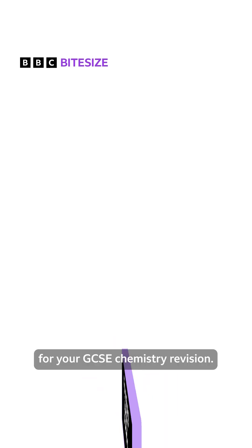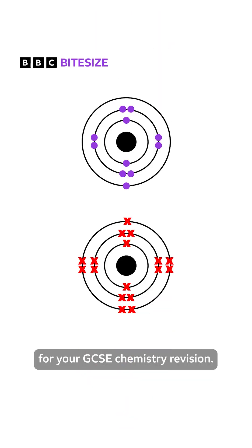Let's take a look at ionic bonding for your GCSE chemistry revision. An ion is an atom, or group of atoms, with a positive or negative charge.